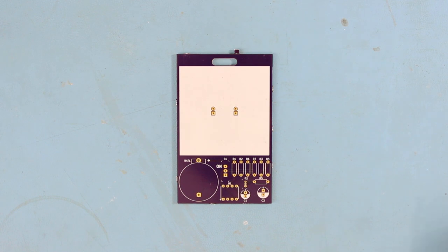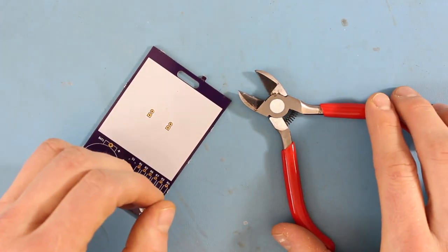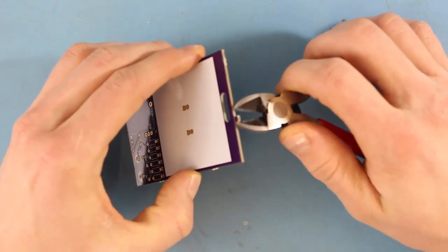If your board was cut out of a panel, you might have tabs along the sides. I recommend using some good cutters to get rid of these and then sanding down the edges.